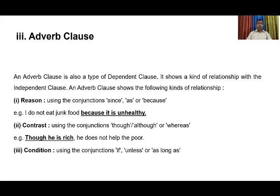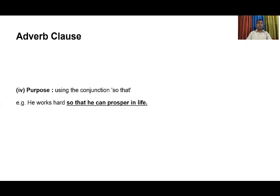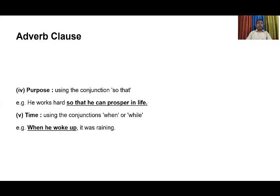Thirdly, condition. Condition is shown by the conjunctions if, unless, or as long as. For example: 'If it rains, we won't go out.' We have another relationship — purpose — shown by the conjunction so that. For example: 'He works hard so that he can prosper in life.' The part 'so that he can prosper in life' denotes purpose of action. Then, time, indicated by conjunctions like when or while. For example: 'When he woke up, it was raining.' The part 'when he woke up' tells us something about time and is also an example of an adverb clause.